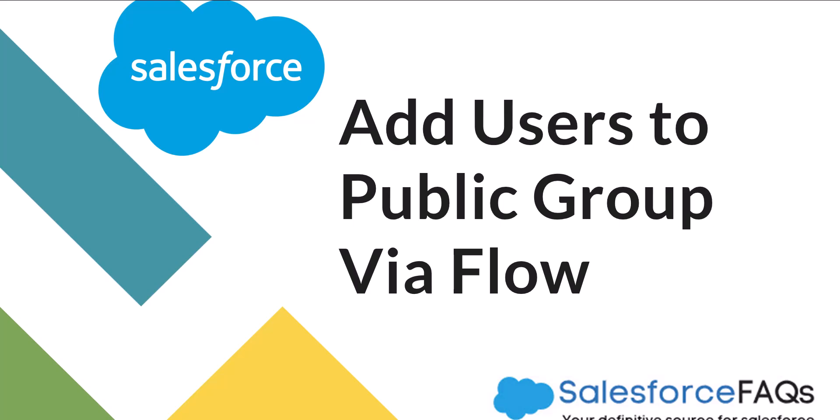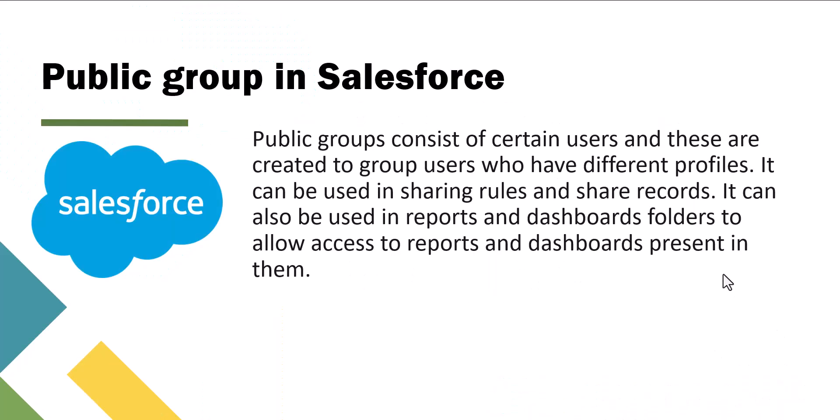In this process we are going to create a record trigger flow that will auto-assign a public group to a user when a user is created with a specific profile ID. In Salesforce, public groups are sets of users that can be assigned roles and permissions in bulk, such as giving access to records or assigning sharing values. They are often used for sharing records, folders, or reports, and automating this process can save you a lot of time.